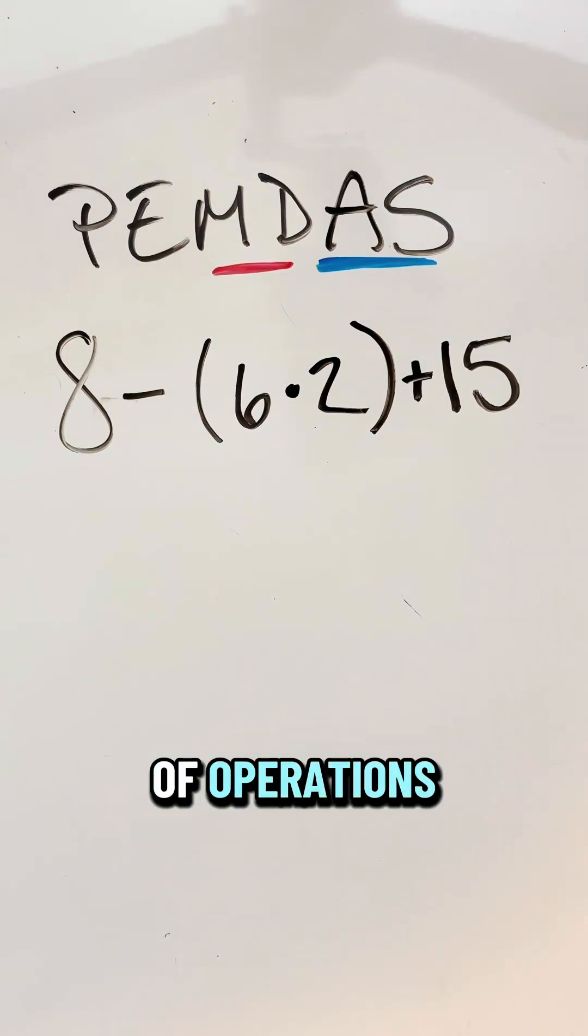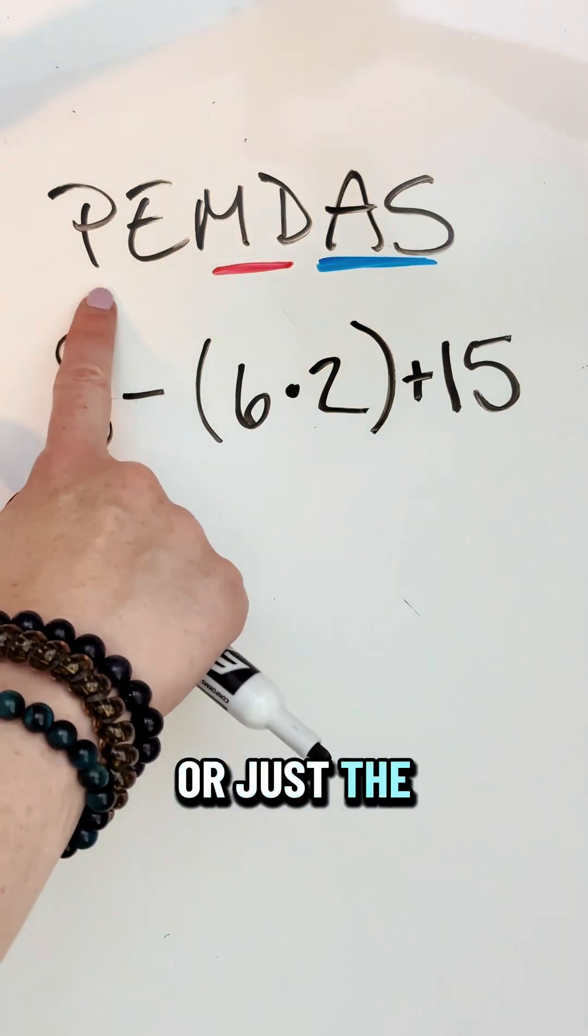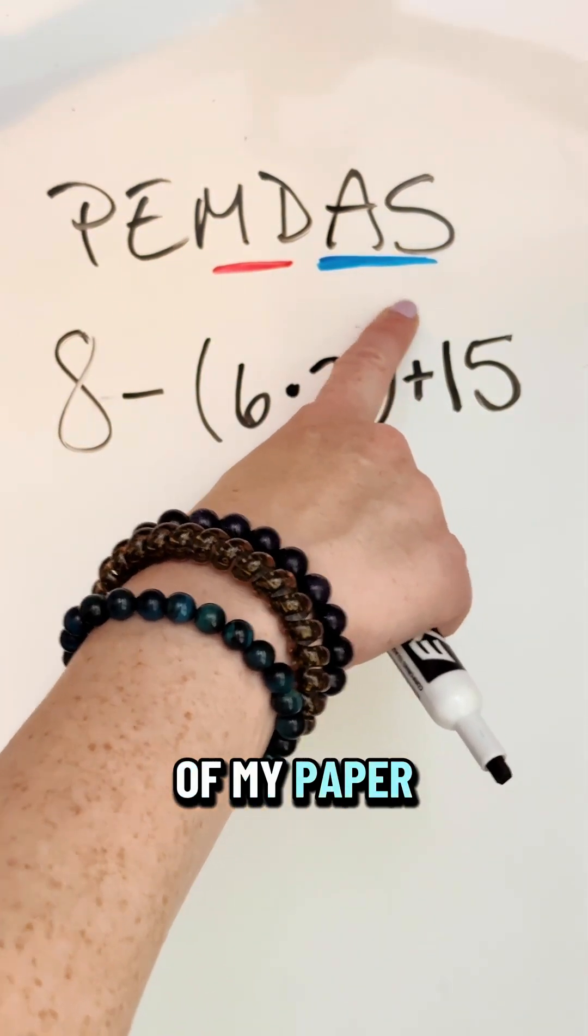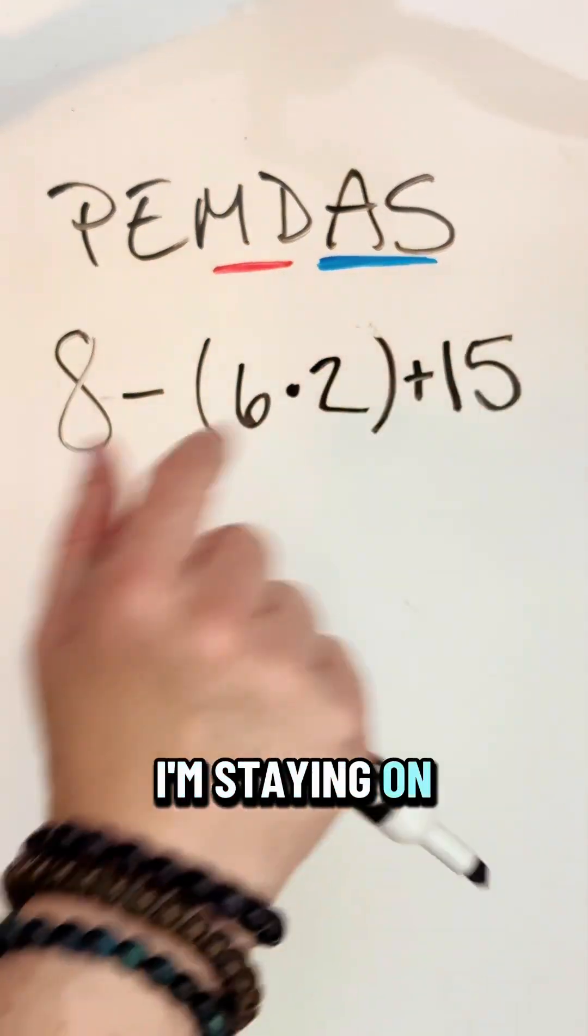Order of operations, better remembered as please excuse my dear Aunt Sally, or just the abbreviation here of PEMDAS. I like to start with the abbreviation up here at the top of my paper. I use it as a checklist so I can make sure that I'm staying on the right order.